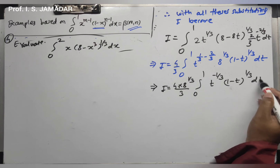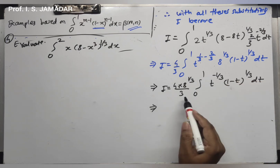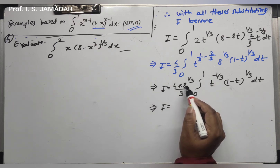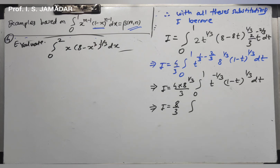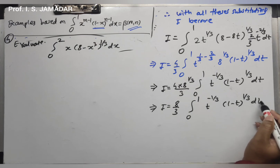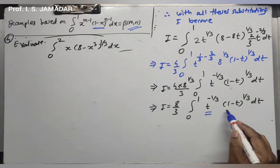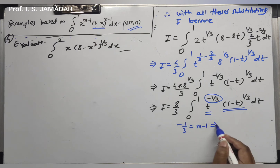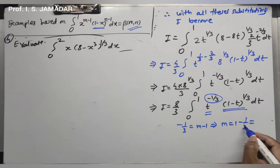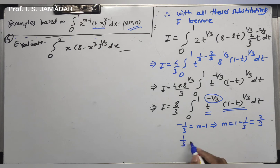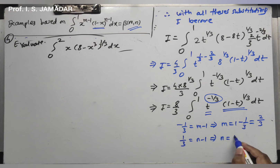Using the relation between beta and gamma, beta(2/3, 4/3) equals gamma(2/3) times gamma(4/3) divided by gamma(2/3 + 4/3). Now 2/3 + 4/3 = 6/3 = 2, so the denominator is gamma(2). Also, gamma(4/3) can be written as gamma(1/3 + 1) = (1/3) times gamma(1/3) using the property gamma(n+1) = n·gamma(n). And gamma(2) = 1! = 1.